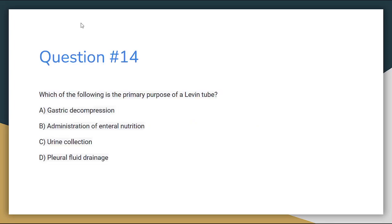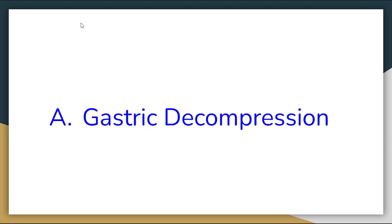Number 14. Which of the following is the primary purpose of a Levin tube? Letter A: Gastric decompression. Letter B: Administration of enteral nutrition. Letter C: Urine collection. Or letter D: Pleural fluid drainage. The correct answer for number 14 is letter A, Gastric decompression.